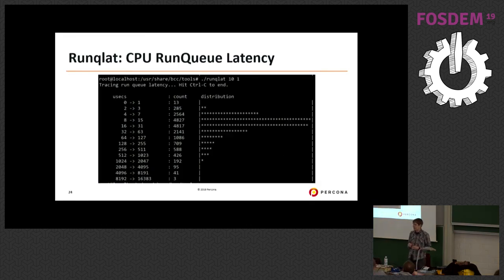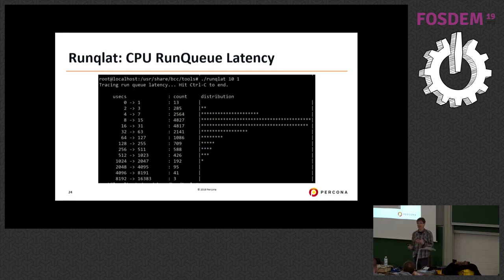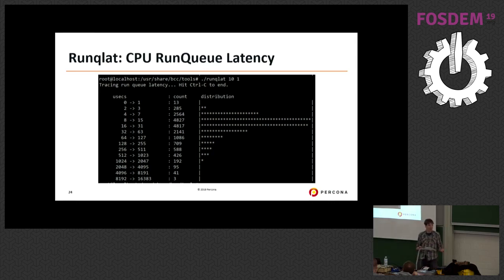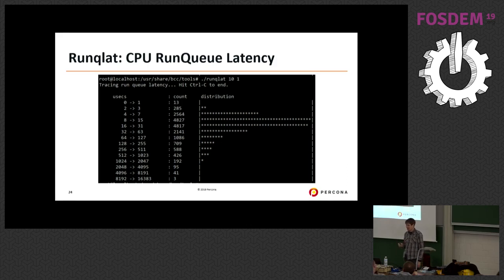For CPU-bound applications, one critical item for responsiveness and performance is: when the application is ready to run, how long does it take the scheduler to find a CPU and actually schedule it? If all CPUs are busy, the application has to wait until one becomes available. This tool lets you see the run queue delay profile — how long from when a program becomes ready to run until it's actually scheduled — which is a great way to understand CPU saturation, much better than just looking at CPU usage averages.